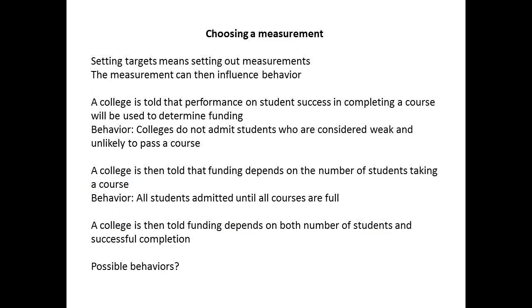When setting targets, it is important for managerial accountants to determine whether the target they set will be measured correctly. Setting out the wrong type of measurement can influence behavior and produce unintended results. Consider this example from a college. The first target was to fund only on the basis of students who successfully complete a course — weak students were not being given the opportunity to study. The revised target, to fund on the basis of students taking courses, led to admitting all students regardless of ability or course value. The third target links funding to both the number of students taking a course and the number completing it.